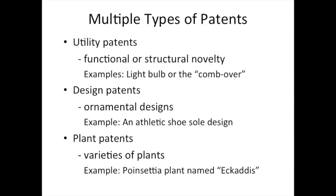There are actually three types of patents in the United States. Utility patents are what most people commonly understand as an invention, either a device or a process. Design patents have no functional novelty, but they can be granted for purely ornamental design. Plant patents are not genetic patents, like GMO corn, but are based on traditional plant breeding.